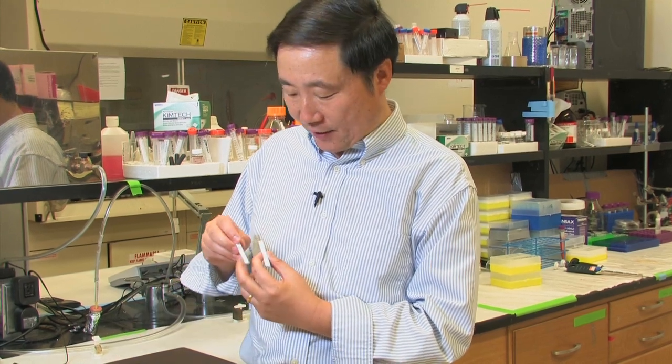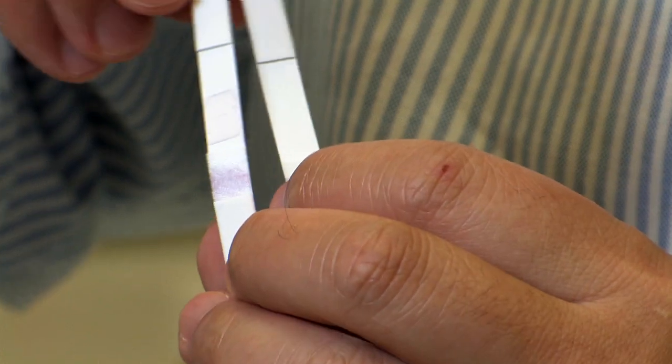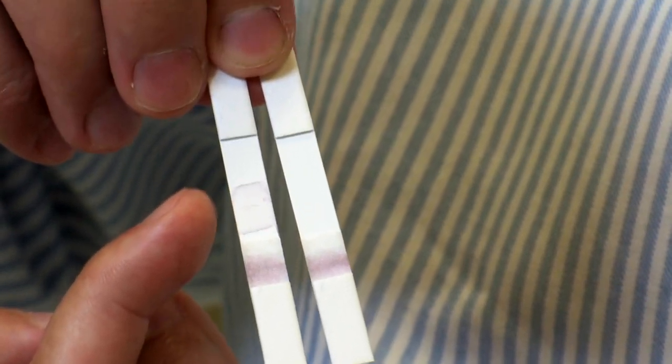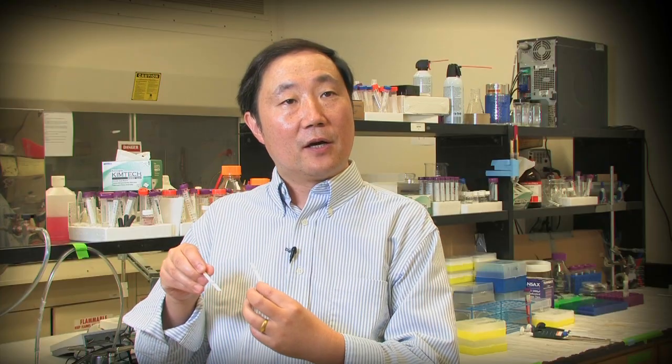Once something like this occurs, there will be color changes. And based on whether the color changes, where it migrates to, in a few minutes one can have semi-quantitative or qualitative information whether the food is safe to eat, the water safe to drink, or whether one has a disease in the urine or blood.